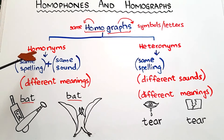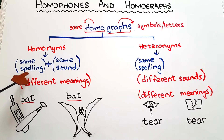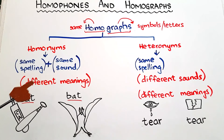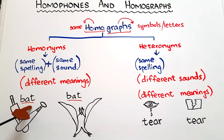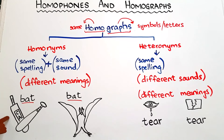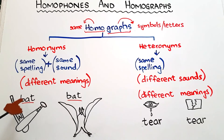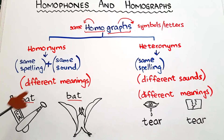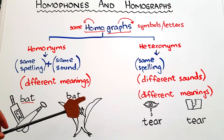What are homonyms? Homonyms are words that have the same spelling and the same sound, but their meanings are different. For example, the word 'bat' — it could be a baseball bat or a cricket bat, and also the animal bat. The spelling of both words is the same, the pronunciation is the same, but the meanings are quite different.